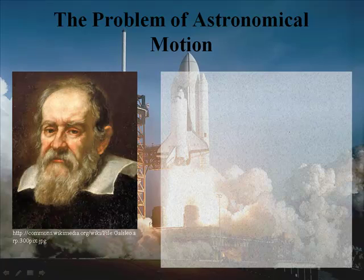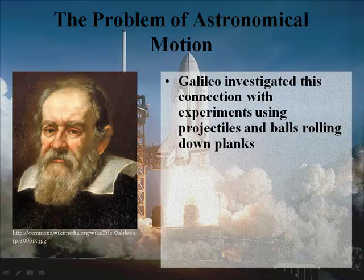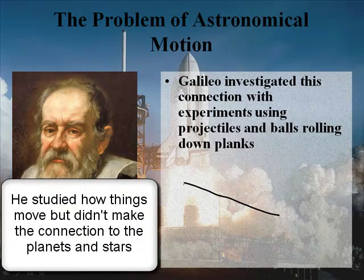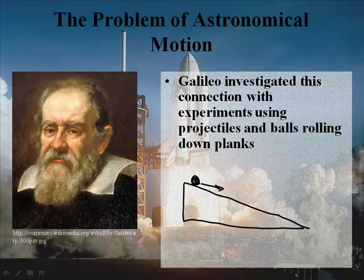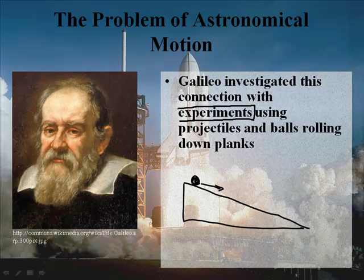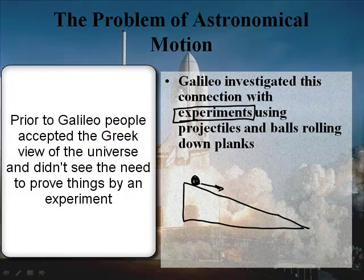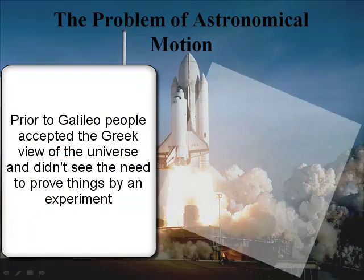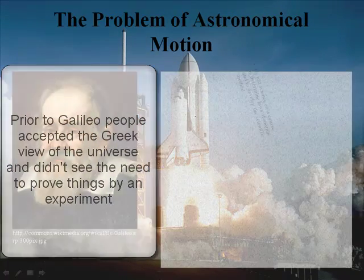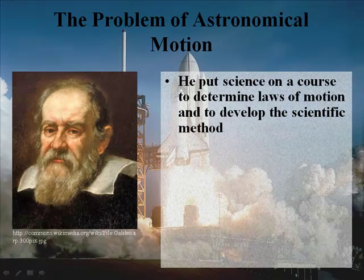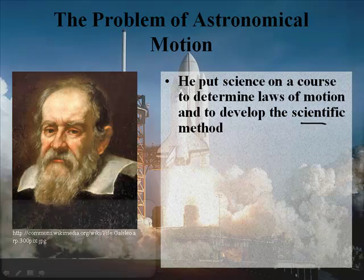What experiments did he do? Galileo investigated his connection with experiments using projectiles and balls rolling down planks. Essentially, he had a plank of some kind and would roll balls down it, and he discovered interesting things. Actually, probably the biggest contribution that Galileo made is that he did it by experiments. Before him, many people were not interested in doing experiments to verify things — they just wanted to see if something was true. His biggest contribution, as you can see flying into the screen here, was that he put science on course to determine the laws of motion and to develop the scientific method.